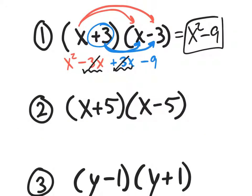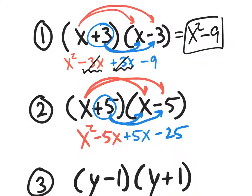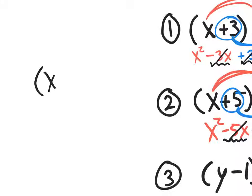Number 2: x times x is x squared; x times negative 5 is negative 5x; positive 5 times x is positive 5x; positive 5 times negative 5 is negative 25. The middle terms cancel out, giving x squared minus 25. A student observes: whenever the signs are different, they cancel each other out. That's a great observation, but they also have to be the same exact binomial — it can't be x plus 2 times x minus 3. It would have to be x plus 2 times x minus 2 for the middle terms to cancel.